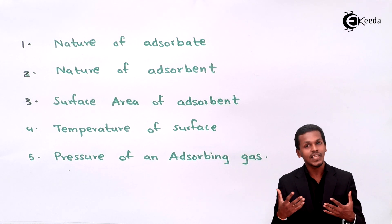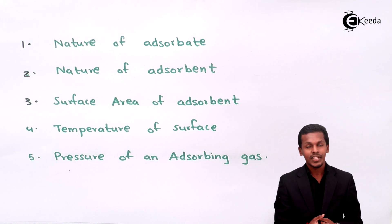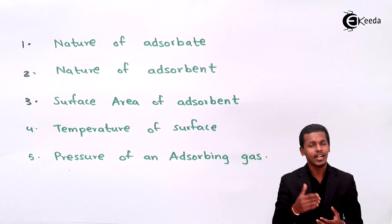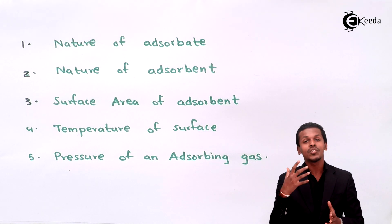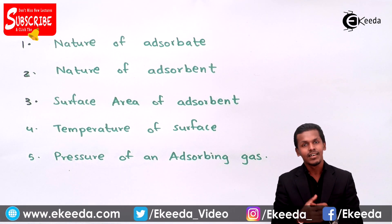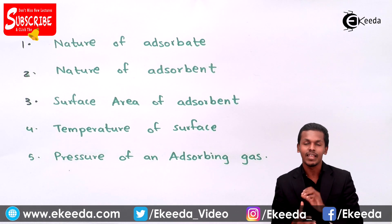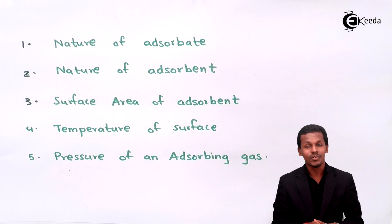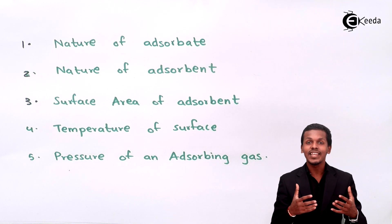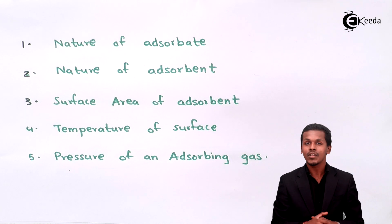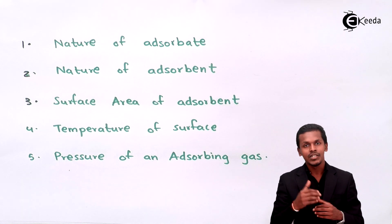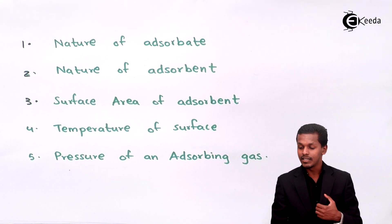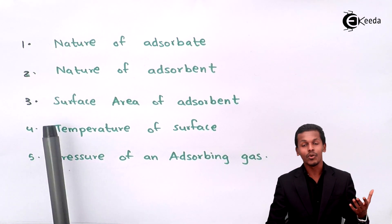Similarly, for charcoal: if we have a piece of charcoal and crush it into powder, the surface area increases greatly. More H2 gas is then needed to cover all the particles of the powdered charcoal. So by increasing the surface area of the charcoal, we increase the amount of gas that gets deposited. The nature of adsorbate, nature of adsorbent, and surface area of adsorbent are all key factors.